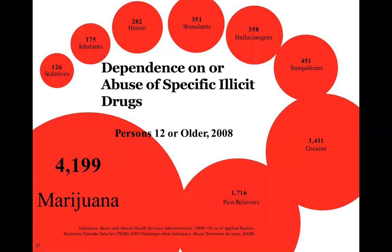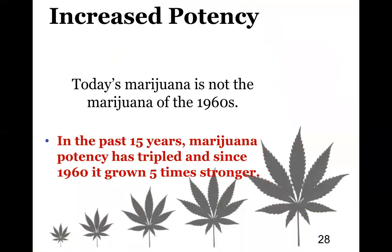Looking at dependency and abuse of specific illicit drugs for persons 12 or older: marijuana use is the highest, people are gravitating toward it. After marijuana, the data shows pain relievers are next, then cocaine, then tranquilizers, then hallucinogenics, and then it drops off. Those pain relievers are opiates and heroin.